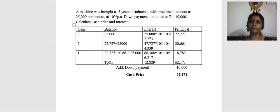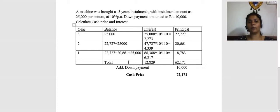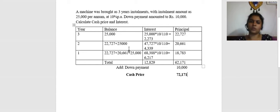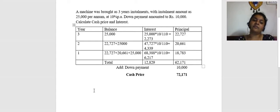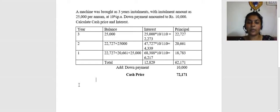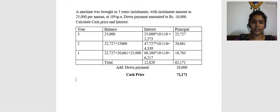This table method will be helpful whether the installment amount is the same or different. If installment one is 2,000, installment two is 4,000, installment three is 6,000 — any amounts — this method works. If the installments are equal, you can also use the annuity method.